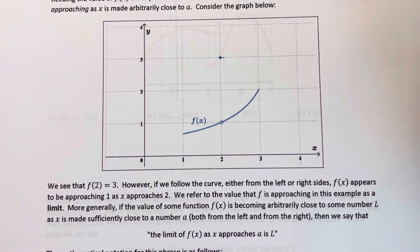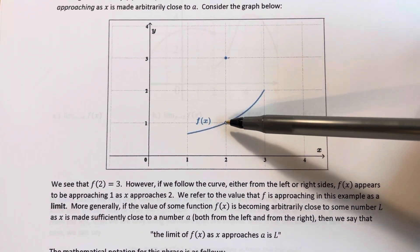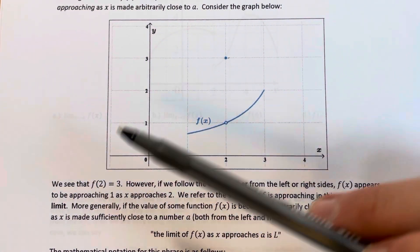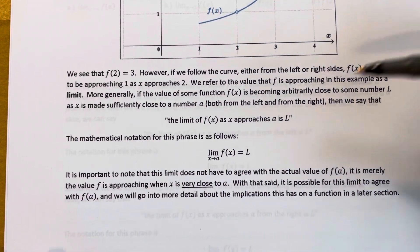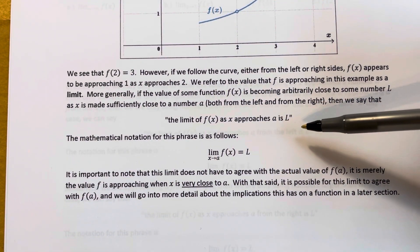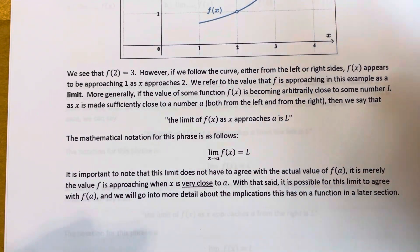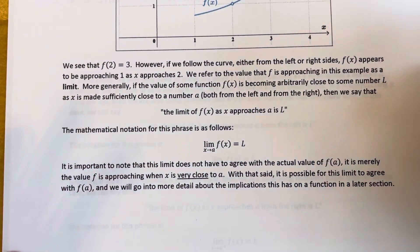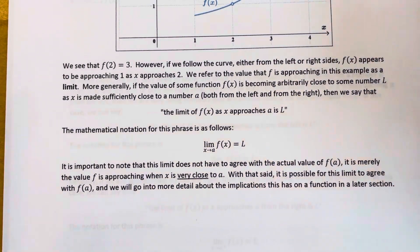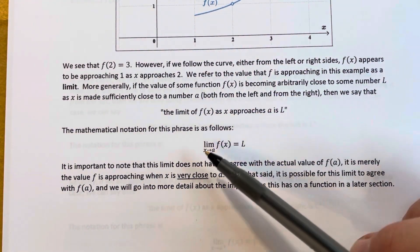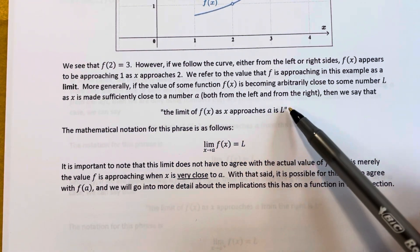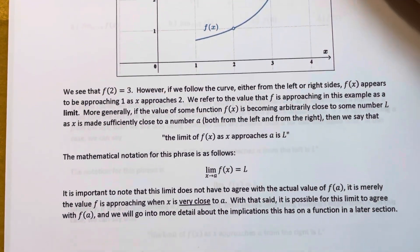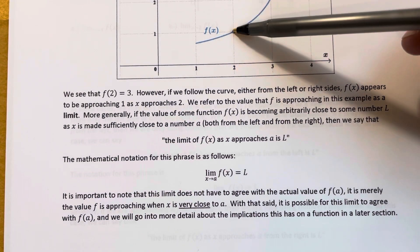There is a distinction between what f is actually doing at 2 and what f is doing as we approach 2. More generally, if I'm looking at any real number a — whether or not it's in the domain of a function — and I plug in x values very close to that number a and see where the function seems to be going, we call that a limit. The limit of f of x as x approaches a is whatever that number is, L. Here, a would have been 2 and L would have been 1.